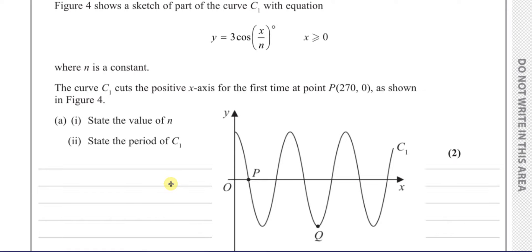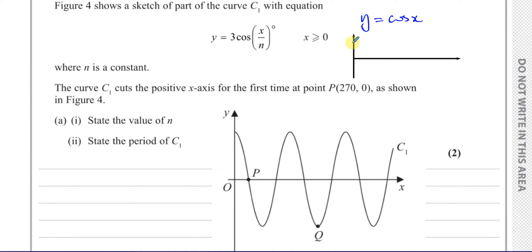We have the cosine curve and a transformation of it. The first thing to do is think about what the parent function y equals cosine x looks like without any transformation. The cosine curve starts from (0, 1), goes through 90 degrees at 0, at 180 degrees it goes to minus 1, at 270 back to 0, and at 360 back to positive 1. That's how the cosine curve looks without any transformations.